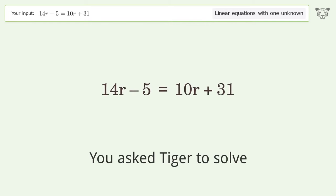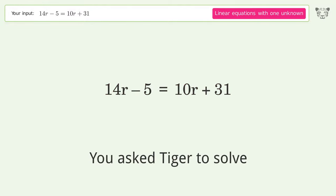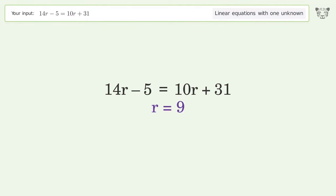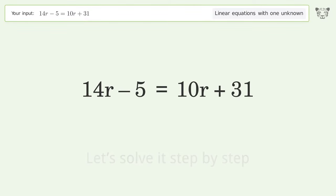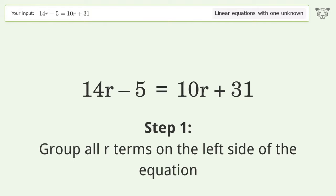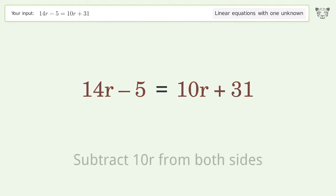You asked Tiger to solve this linear equation with one unknown. The final result is r equals 9. Let's solve it step by step. Group all r terms on the left side of the equation by subtracting 10r from both sides.